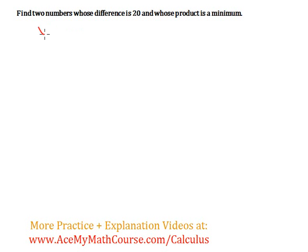So I'm going to call these two numbers x and y, and their difference is 20. So I can say that x minus y is equal to 20. And what I want to minimize though is the product.